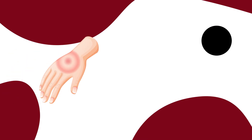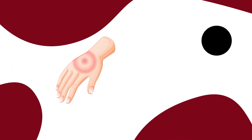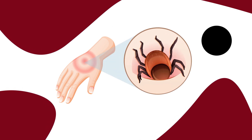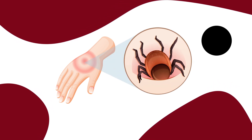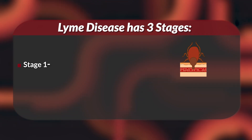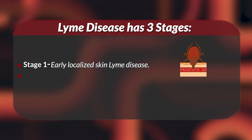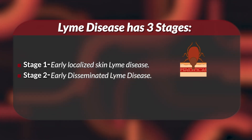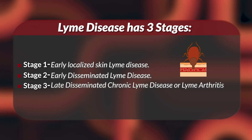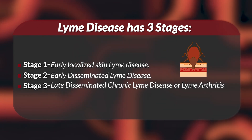After the bacteria gets into the skin, they cause a local infection that activates the local immune cells, leading to the inflammatory response in the first stage of Lyme disease. Lyme disease has three stages: Stage 1, early localized skin Lyme disease; Stage 2, early disseminated Lyme disease; and Stage 3, late disseminated chronic Lyme disease, or Lyme arthritis.